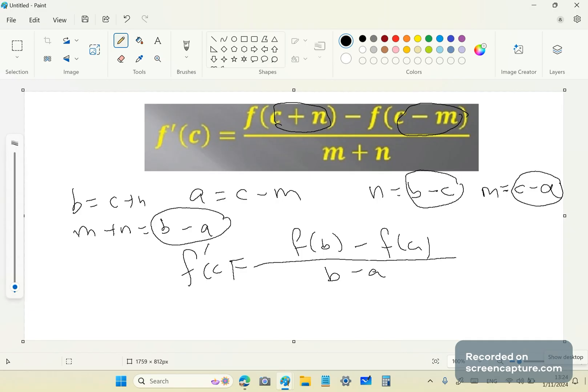And since C plus N is equal to B, you have F of B minus, since C minus M is equal to A, F of A is equal to F prime of C. It's as simple as that, people. So the idiots who said that the new calculus is wrong were actually trashing the mean value theorem. Isn't that amazing? So that's the first part of it.